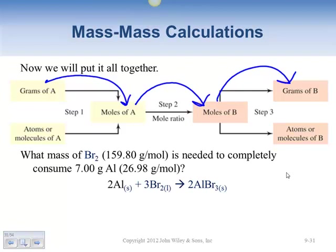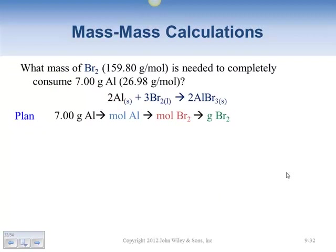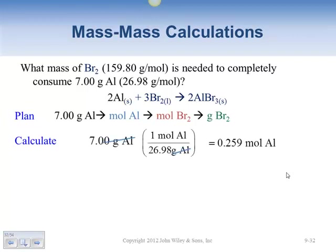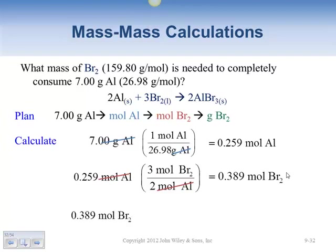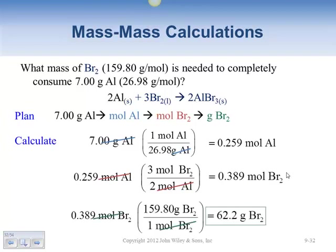What mass of bromine (molar mass 159.8 g/mol) is needed to completely consume 7 grams of aluminum? The plan: grams of aluminum → moles of aluminum → moles of bromine → grams of bromine. Note: bromine is diatomic, so use Br₂, not Br. We do our first step grams to moles of aluminum, second step moles to moles using the balanced equation, and third step moles to grams of bromine. Our final answer is 62.2 grams of bromine.